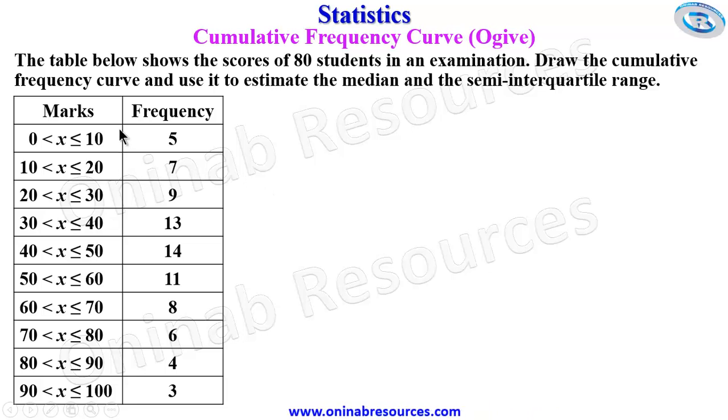We have the marks here given as a range of values of x. This means from 0 to 10, 10 inclusive. And then from 10 to 20, this is actually from 11 to 20, from 21 to 30, and so on with their respective frequencies.